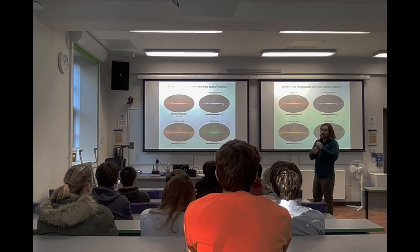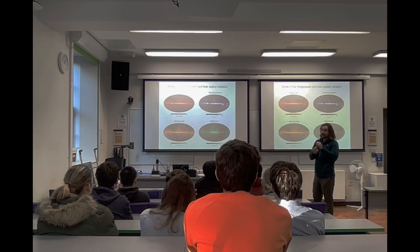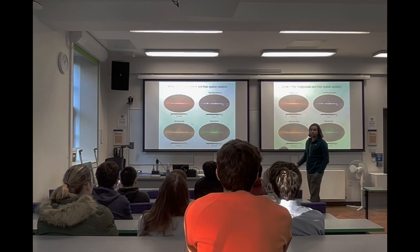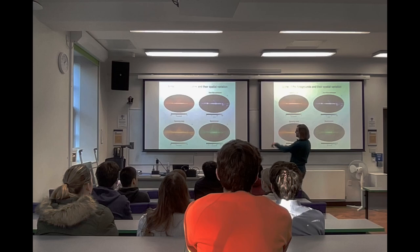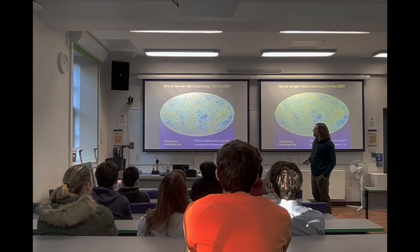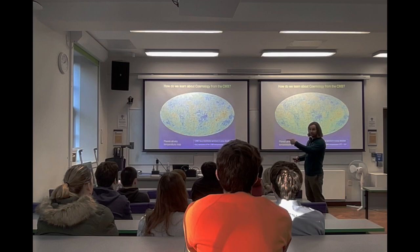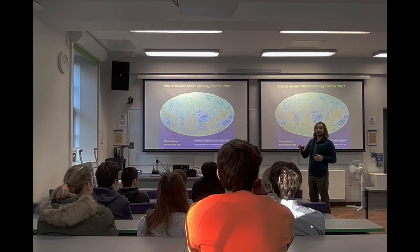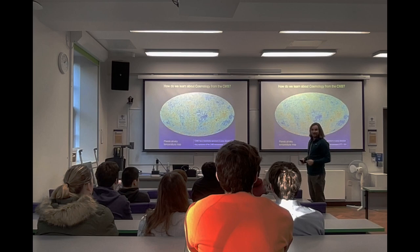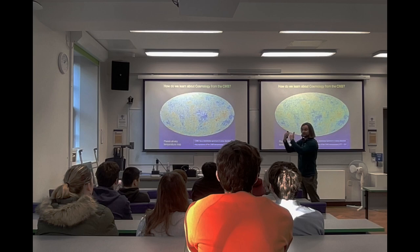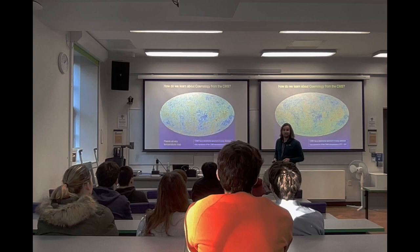Once you subtract and remove the thermal dust, free-free emission, and other foregrounds, you get to the beautiful CMB sky map. Now we've skipped many aspects — for example, we're moving with respect to the microwave background, so the largest fluctuation you see is a CMB dipole. This comes from relativistic boosting: in the forward direction we see more energetic, hotter photons, and in the backward direction fewer. This is really special relativity in action.